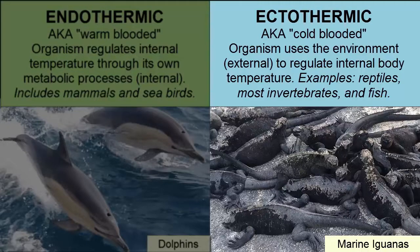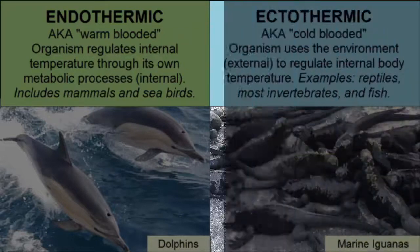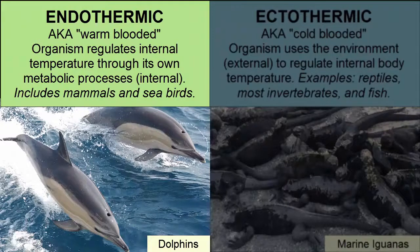Organisms are called ectothermic if they have no internal temperature regulation and must use the external environment to regulate their temperature — also called cold-blooded, though that term is not ideal for ectotherms that may actually have very warm internal temperatures, such as a black marine iguana basking on a black rock in the sun. Ectothermic organisms include most fish, reptiles, and invertebrates.